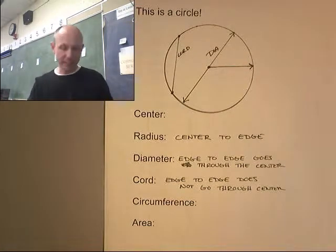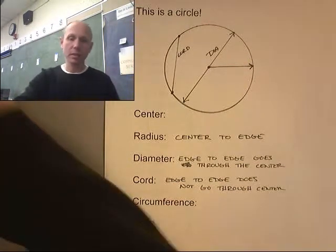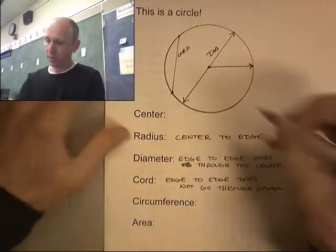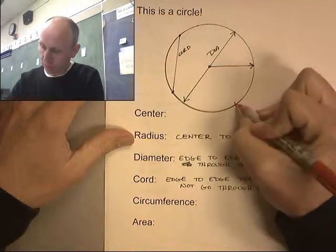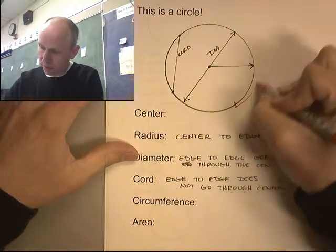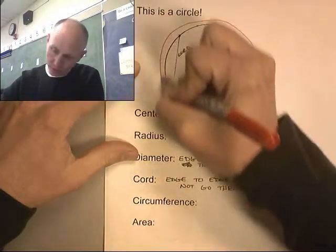Circumference is the distance around a circle. So if this is my starting point right here, the circumference would be this distance around the circle.